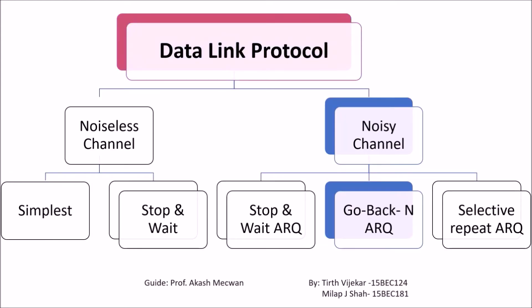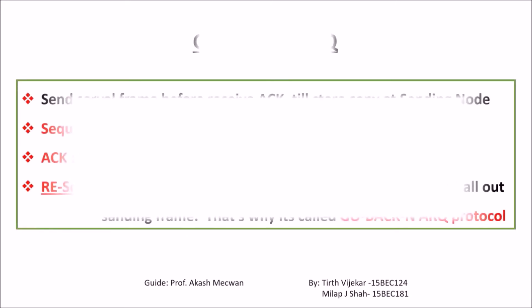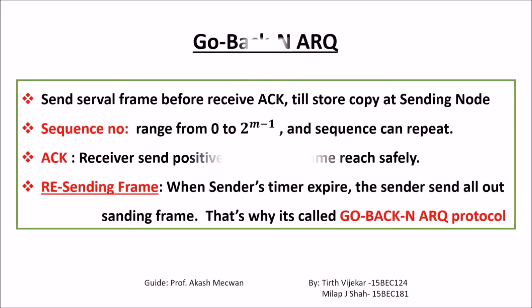Let's learn another protocol in the noisy channel, which is Go-Back-N Automatic Repeat Request. As we have seen in the previous protocol, the transmitter wastes most of the time waiting for acknowledgements. Go-Back-N solves that problem by sending a bunch of frames together. In this protocol, both the transmitter and receiver have a larger buffer size.